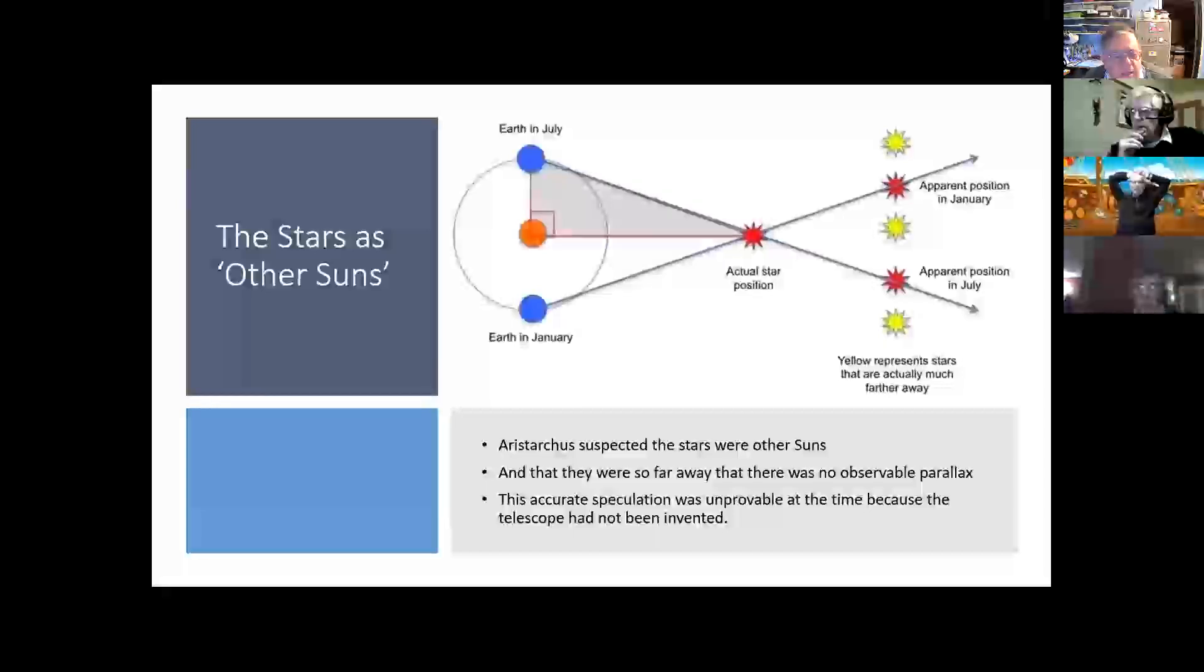He actually wrote about the idea that the stars were, in fact, other suns, which, of course, we now know to be true, and said that they were so far away that any movement of them was creating such a tiny amount of change in the apparent angles, as shown in the diagram here. This is how we measure the distance to nearby stars, at least, is by measuring the change in the angular position at different times of the year, using the Earth's orbit as a baseline and doing some similar triangles to work out how much the nearby stars have moved compared to the ones that are so far away that they don't appear to change at all.